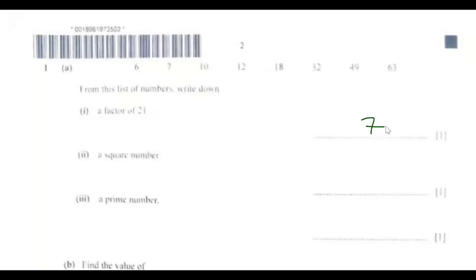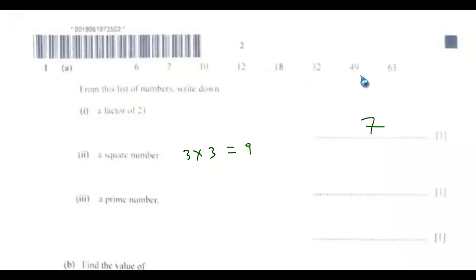Next, find a square number. A square number is when you multiply an integer by itself. For instance, 3 multiplied by 3 gives you 9, so 9 is a square number. Looking at the numbers in the list, only 49 can be written as 7 by 7, so 49 is the square number.